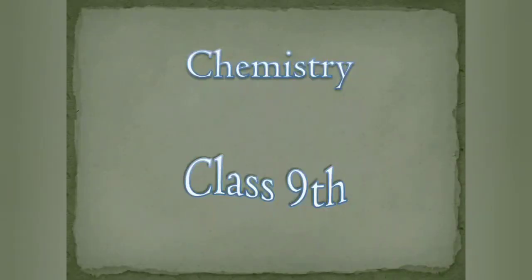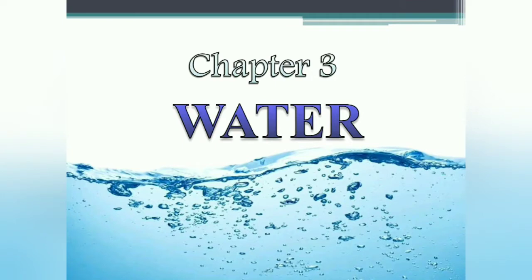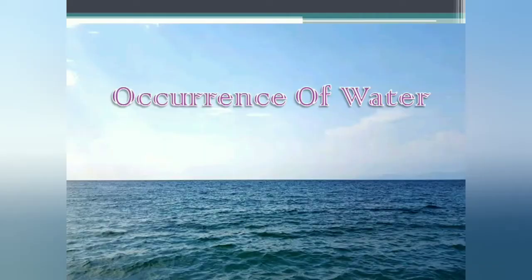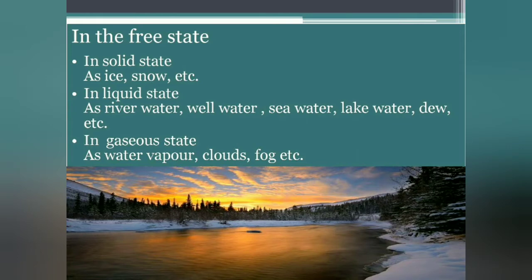Hello everyone, I hope you are doing well. Here is your chemistry teacher and now in this video we are going to start with the third chapter, water. As we all know that water is one of the most common and most essential substances on earth because nearly 71% of the earth's surface is covered with water and without water life is not even possible. Water occurs in free state as well as in combined state. In free state it occurs in solid, liquid and gaseous state. You can easily see these three states of water around you.